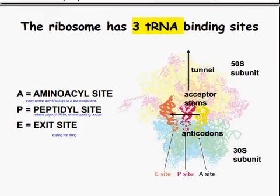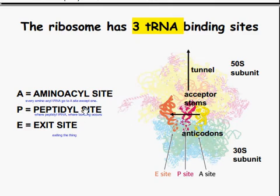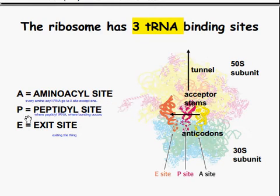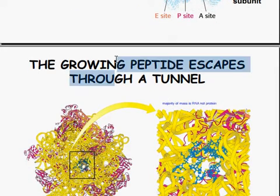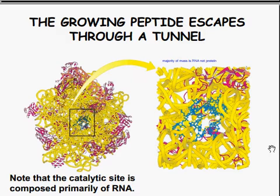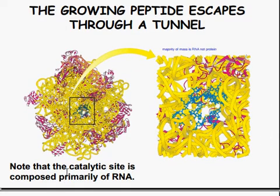The ribosome has three tRNA binding sites: the aminoacyl site (A site), the peptidyl site (P site), and the E site (exit site). Every aminoacyl tRNA goes to the A site except for the first one. The P site is where peptidyl tRNA binds and where bonding occurs. The newly bound amino acids come up through a tunnel in the top of the 50S unit. The majority of the mass is RNA, not protein-based, and the catalytic site is composed primarily of RNA. We'll get into the mechanics of protein synthesis next time.